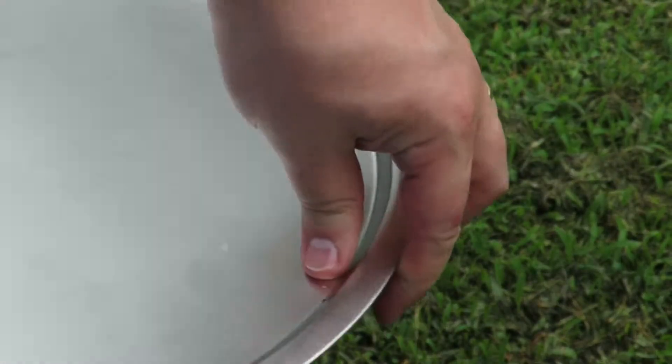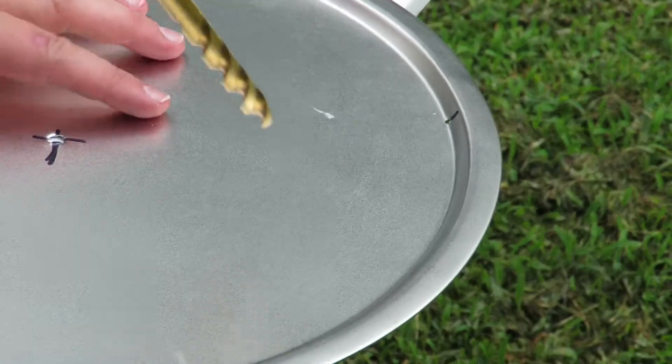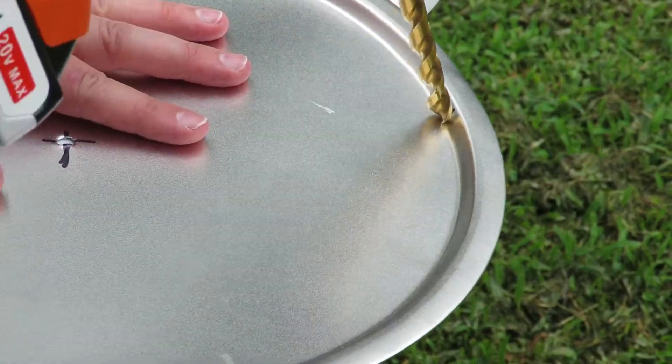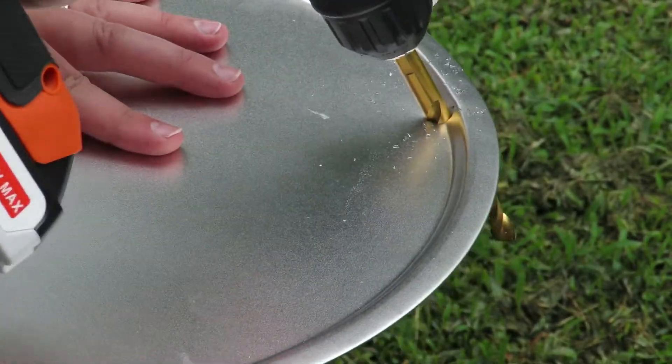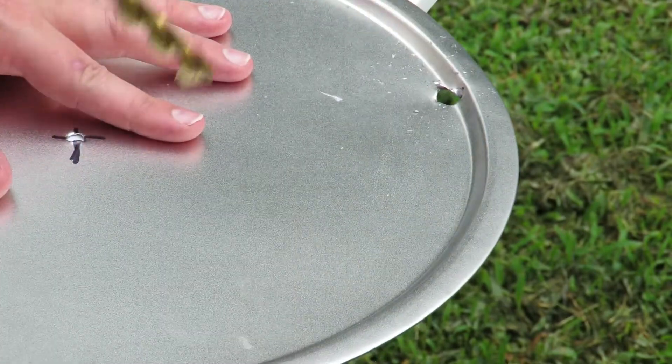Dividing the pizza pan into thirds, make three marks near the lip of the pizza pan using a marker, one for each leg. Using a 3 1⁄8 inch drill bit, drill a hole at each of the three marks. You'll see that I've drilled the pilot hole first to keep the drill bit from wandering. Use the file to smooth out any rough edges on the holes that you just made.